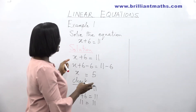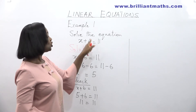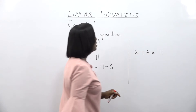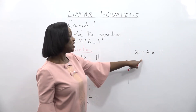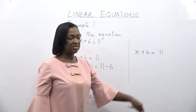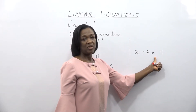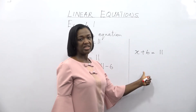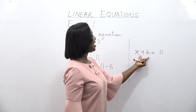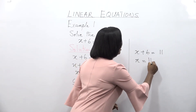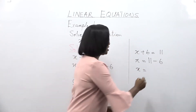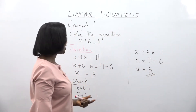Another method is to simply send 6 from the left hand side of the equation to the right hand side. So x plus 6 is equal to 11. Since 6 is being added to x, if it crosses the equality sign, it changes from positive 6 to negative 6. Any sign that crosses a sign of equality would change — positive becomes negative and negative becomes positive. So x equals 11 minus 6, and 11 minus 6 is equal to 5. Whichever method you use, you will get the same answer.